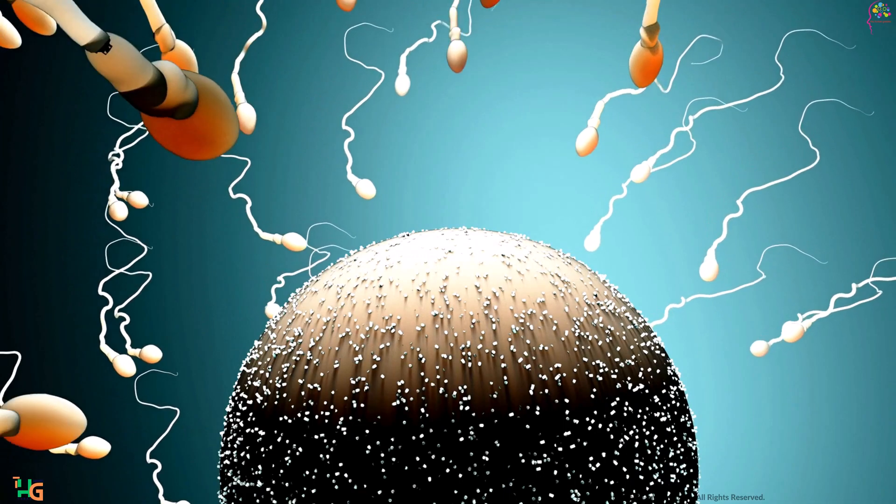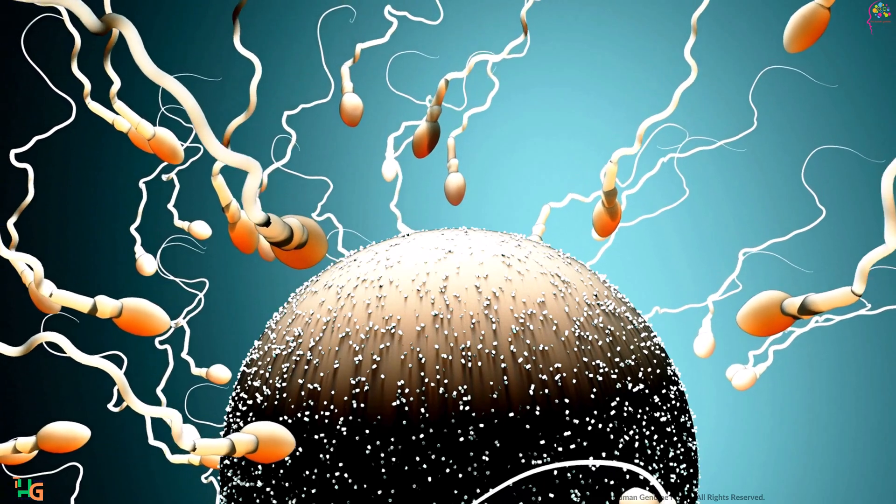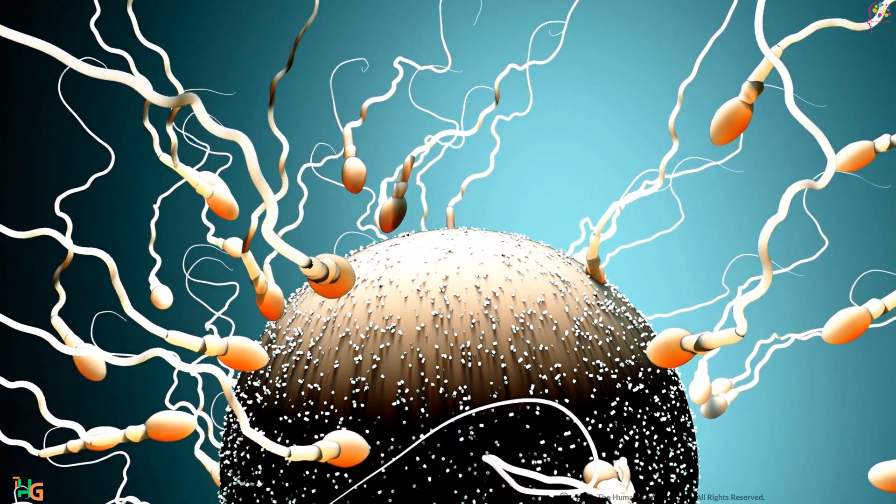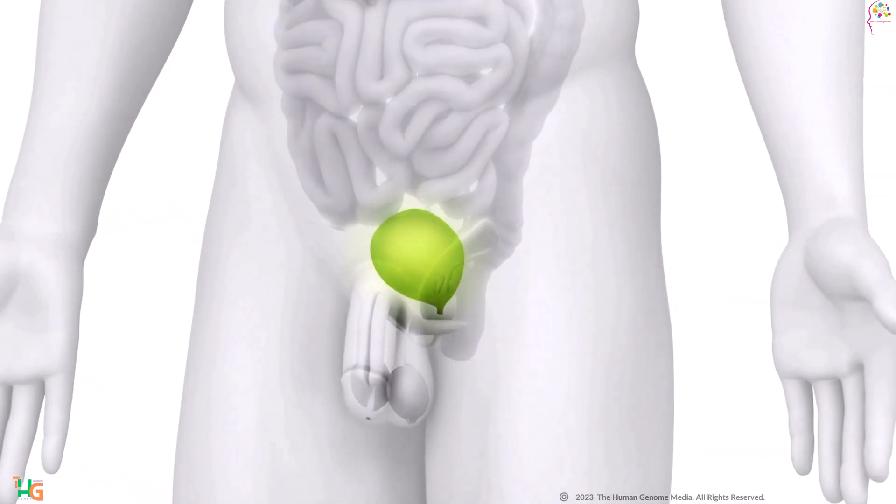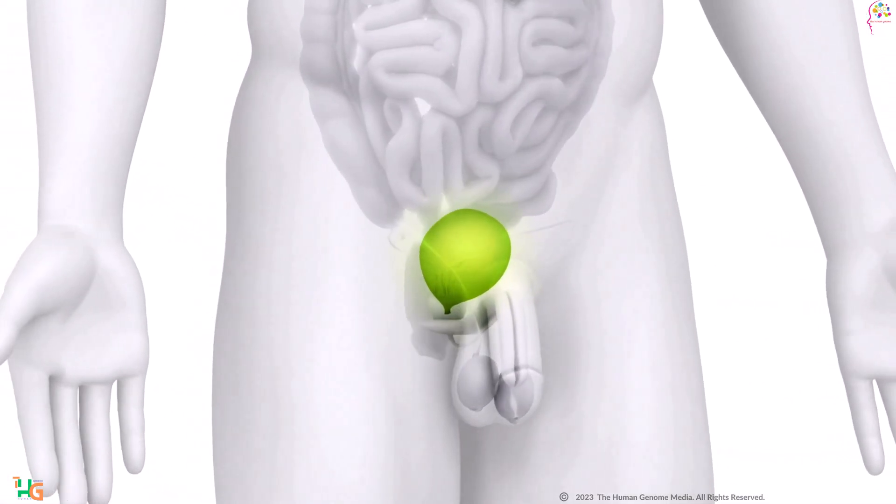The vas deferens carries mature sperm from the epididymis to the ejaculatory duct during ejaculation. Seminal vesicles produce seminal fluid, which provides nourishment and motility to sperm, enhancing their chances of fertilization.